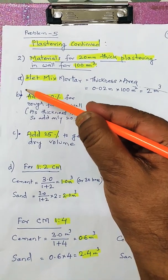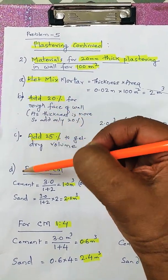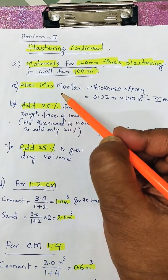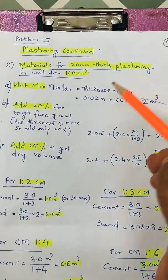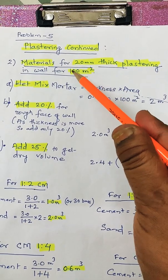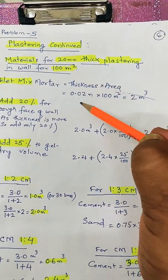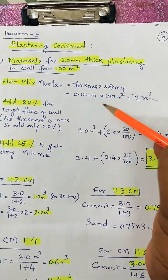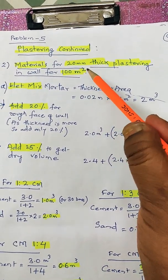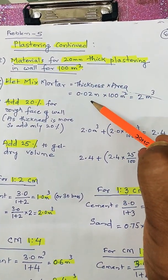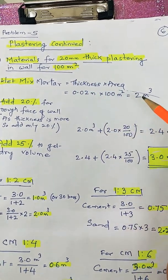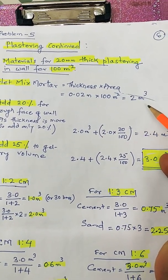There are four steps: A, B, C, D. The first step is to calculate the wet mixed mortar. Wet mixed mortar is the consolidated area applied on the wall. It is 0.02 meters, that is 20mm, converted into meters, multiplied by 100 square meters of wall. It comes out to 2 cubic meters.